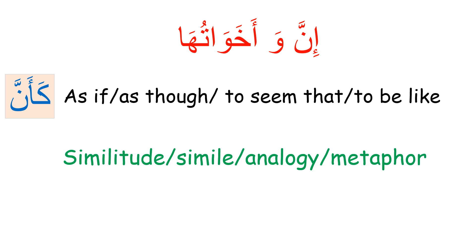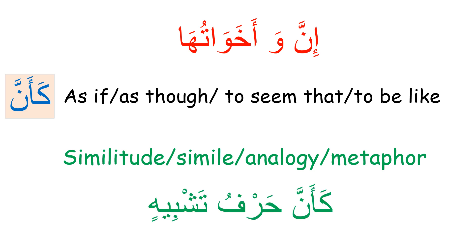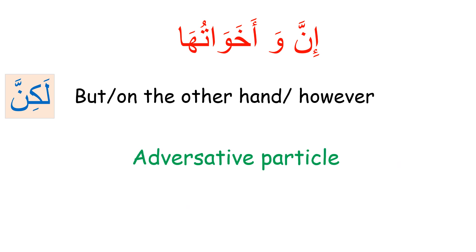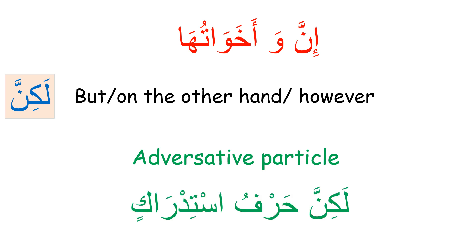Ka'anna means 'as if,' and its function varies between simile, analogy, and metaphor. In Arabic we say ka'anna harf tashbeeh. Next, lakinna means 'but' or 'on the other hand' — it is an adversative particle used to rectify a statement. It is called lakinna harf tidraak, used so that the speaker corrects his words so the listener does not misunderstand what is meant.